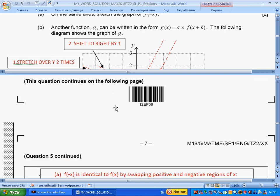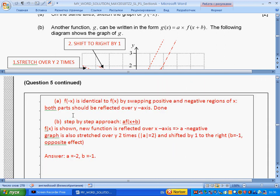Here we have the solution. For part A, f(-x) is identified by swapping positive and negative regions of x; both parts should be reflected over the y-axis. For part B, step-by-step approach: the new function is reflected over the x-axis so a is negative, the graph is stretched by 2 times so absolute value of a is 2, and shifted by 1 to the right so b = -1. Answer: a = -2, b = -1.